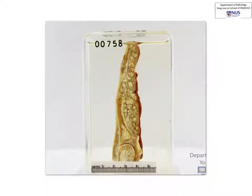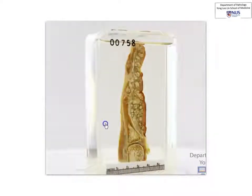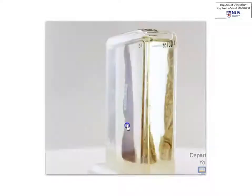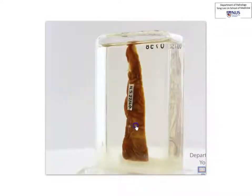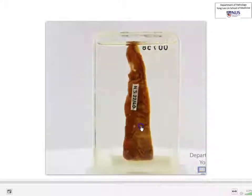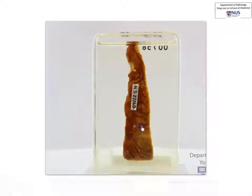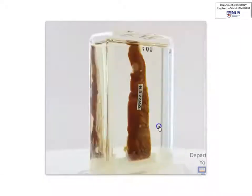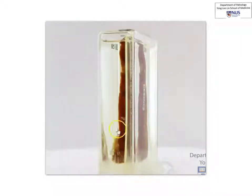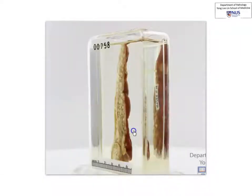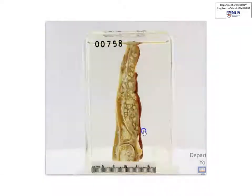Here is a virtual pathology specimen showing a finger which is cut in longitudinal section. I'm just going to rotate it for you to show you the skin surface here. You can see the fingernail on top, and then here we come back to the cut surface.